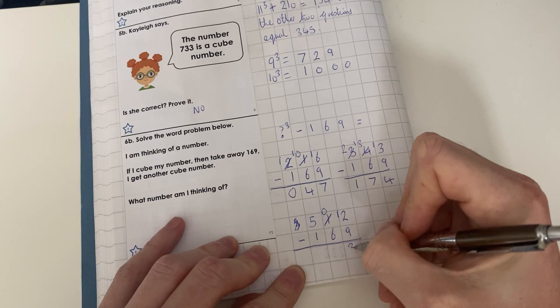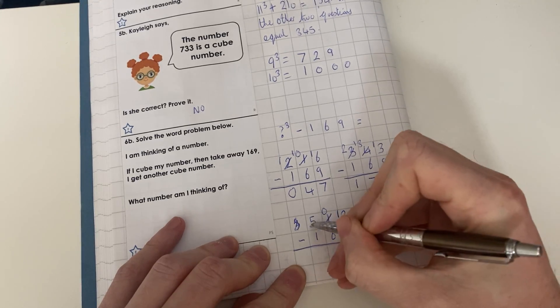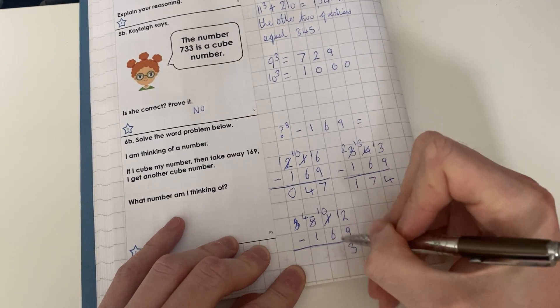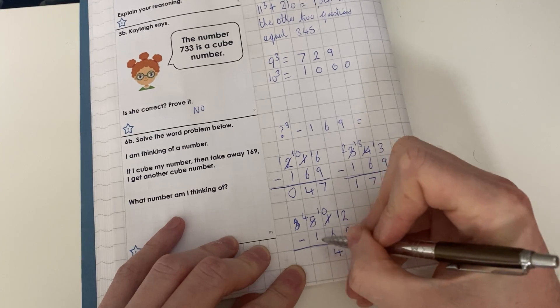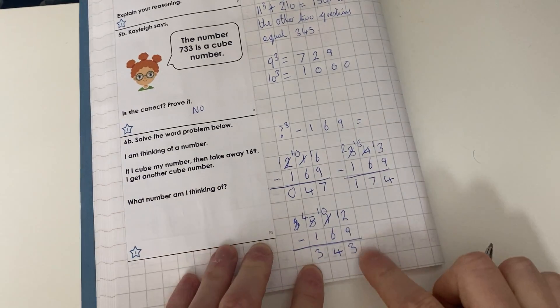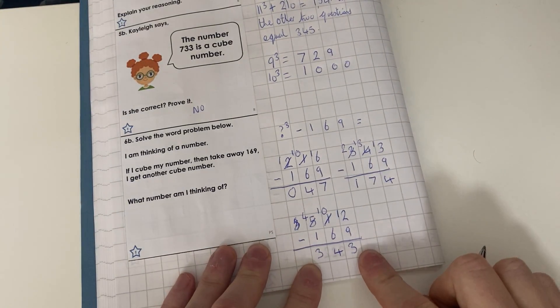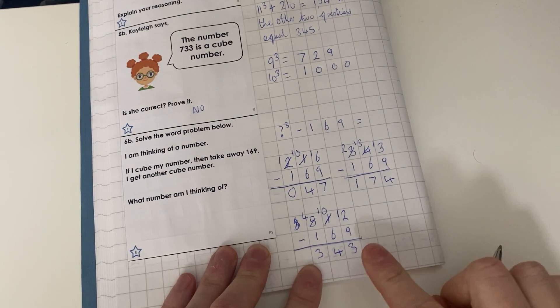2 - 9 cannot do. 12 - 9 = 3. 0 - 6 cannot do, 10 - 6 = 4. 4 - 1 = 3. So our answer here is 343. Is 343 a cube number? Yes it is, because 343 is 7³.